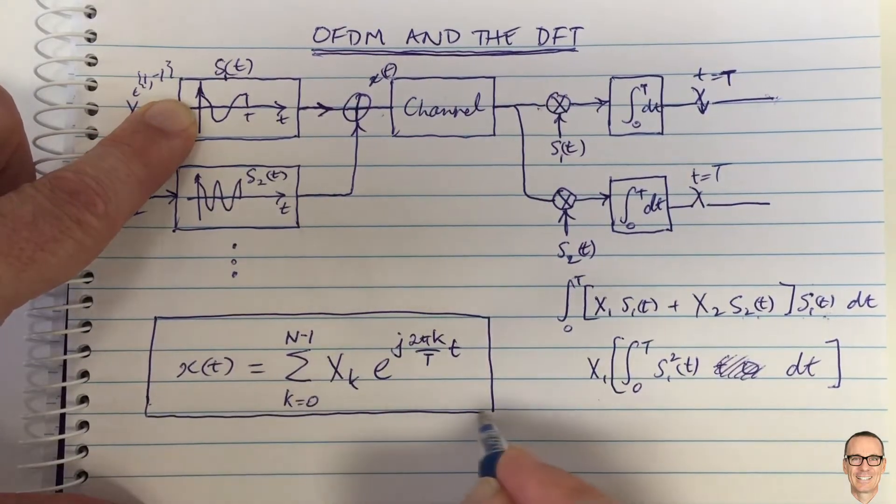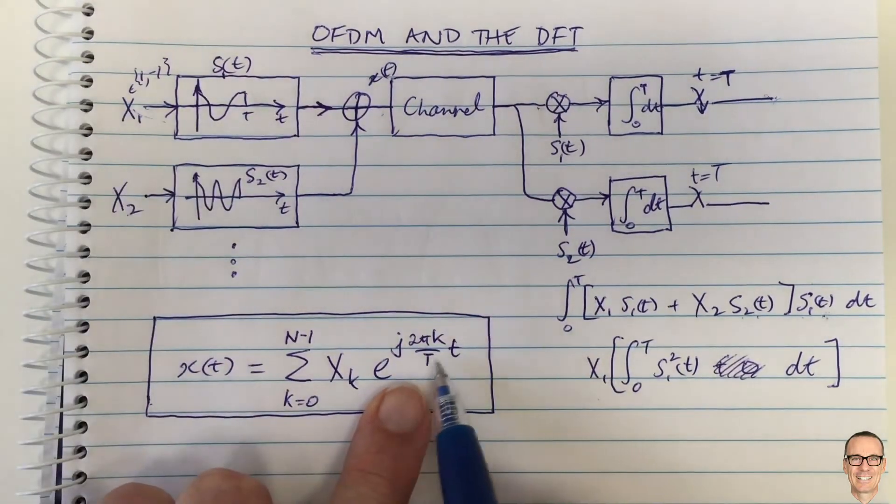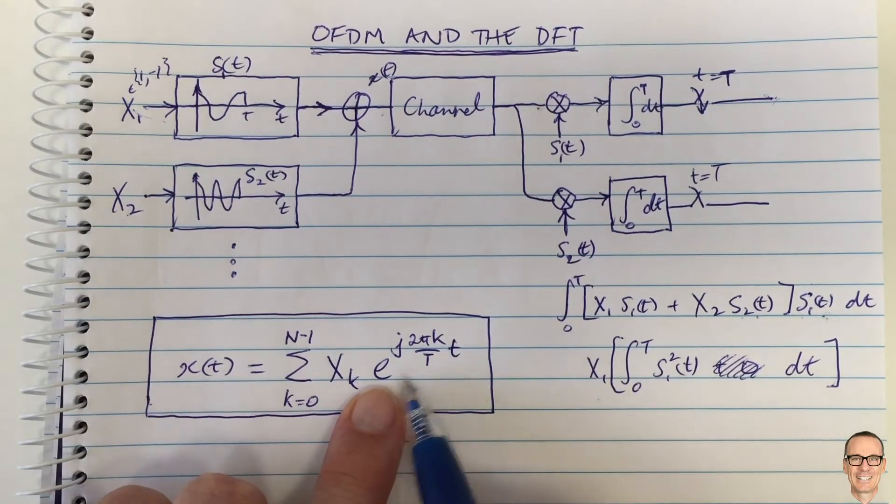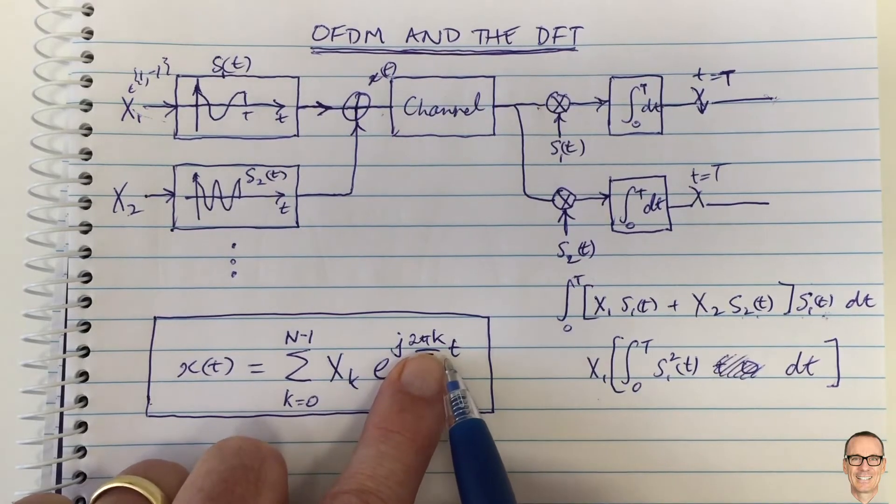This e to the (j2πk/T)t, as we know, equals cos of that plus j sine of that. So there's a cosine waveform which I've drawn, plus a sine waveform which I haven't drawn, but this equation includes that.